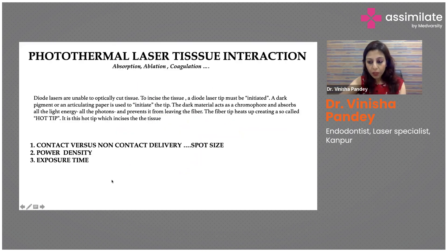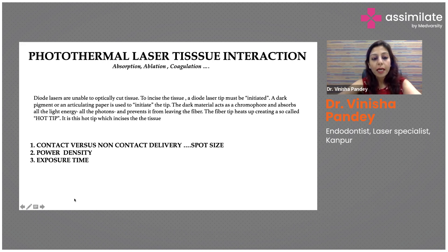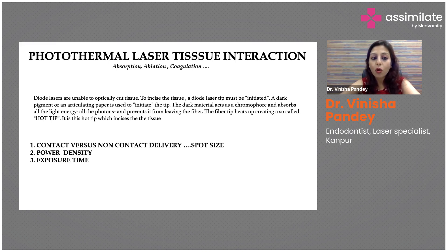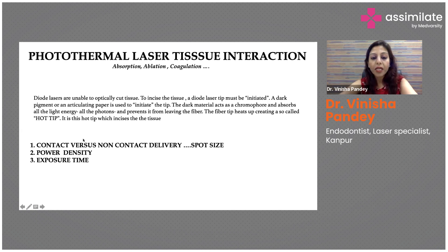In photothermal laser-tissue interaction, the effects include absorption, ablation, and coagulation. Diode lasers are unable to optically cut directly into tissue. A diode laser must be initiated — a dark pigment or articulating paper is used to initiate the tip. This dark material acts as the chromophore, absorbing all the energy and photons, preventing them from leaving the fiber. The fiber tip heats up, creating a so-called hot tip, which then incises or cuts the tissue.